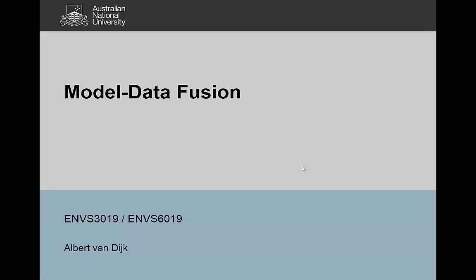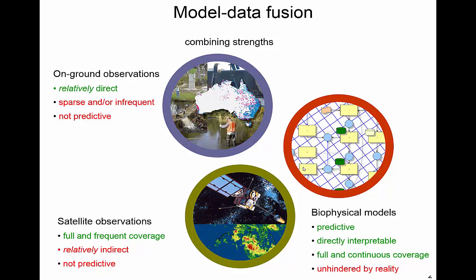Hello, this is Albert van Dyck, and in this little video I want to talk about model data fusion. So what is model data fusion? Basically, model data fusion implies that if you have a model of the real world — you think you more or less know how the real world behaves — but then you've also got actual data, actual observations of the world, and you're going to try and bring those two together in some useful way.